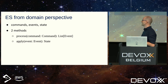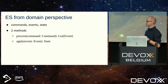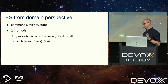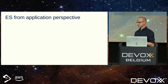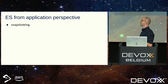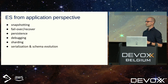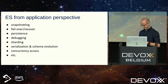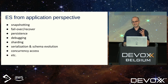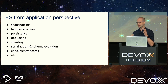That's partially true — I would recommend implementing the domain part by yourself. But your application will be production-ready only when you also deliver features like snapshotting, failover, recovery, persistence, debugging, sharding, serialization, schema evolution (a huge topic), concurrency access, et cetera. Implementing all of this by yourself is a recipe for failure. I would love to write my own event sourcing framework, but I know I would make all possible mistakes — so just use something that was implemented and tested by many programmers.